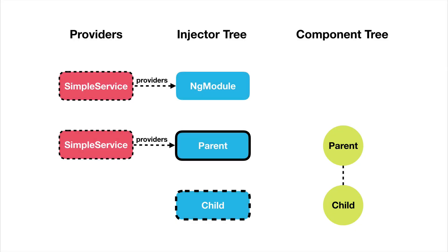Looking at the injector tree: we've configured the NgModule injector with SimpleService, but we've also configured the injector associated with ParentComponent with SimpleService as well. So now each instance of ParentComponent has its own injector, and each of those injectors has its own SimpleService configured on it. When a ParentComponent requests SimpleService, its own injector returns it — it won't be forwarded to the NgModule.